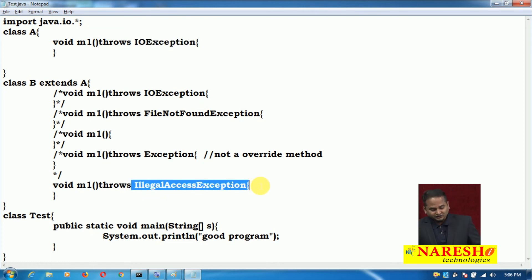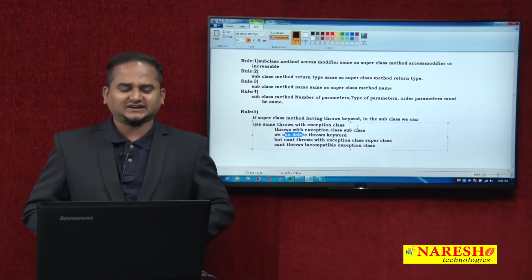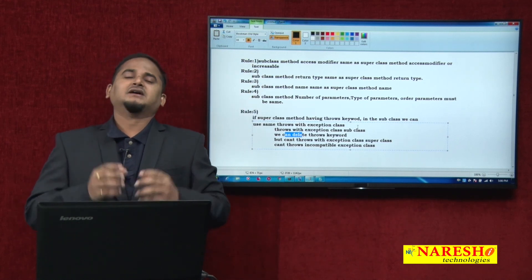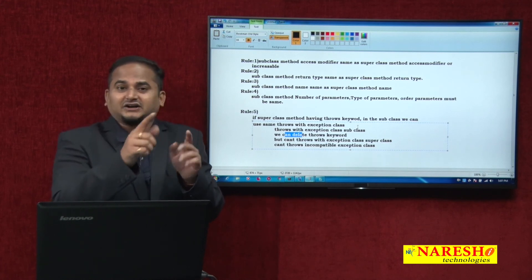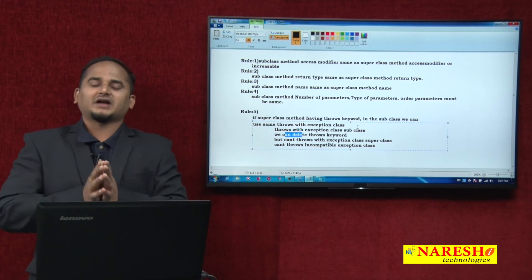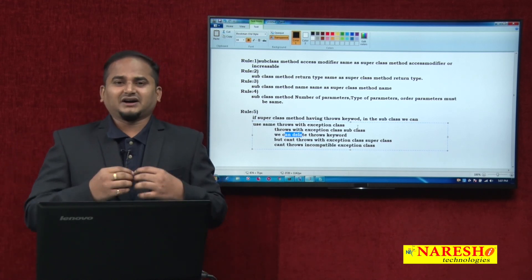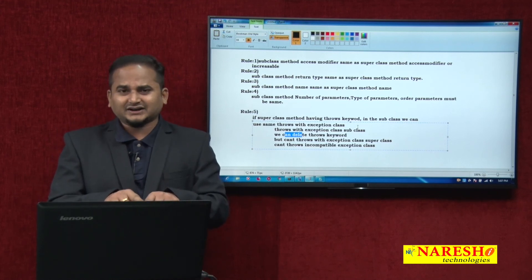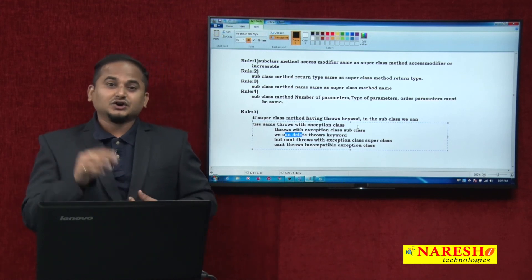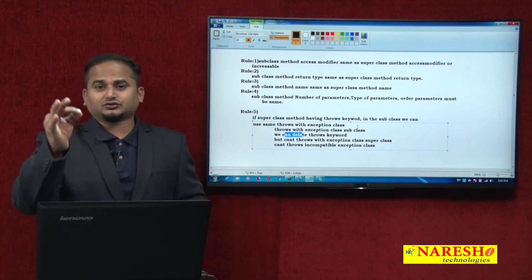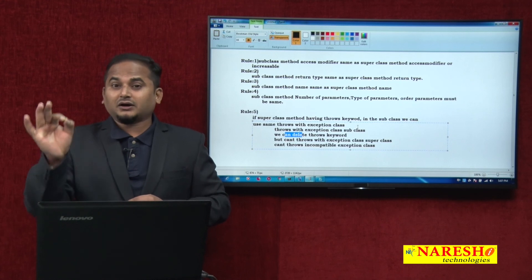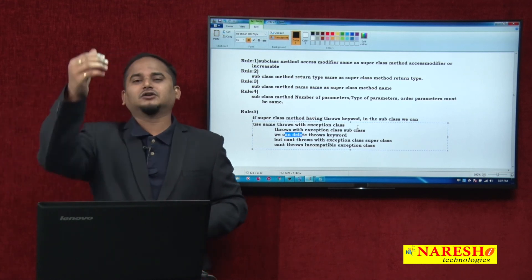So this is the fifth overriding rule in Java. Up to now there are five overriding rules. First: subclass method access modifier must be same as or higher than superclass access modifier. Second: subclass method return type must be same as superclass method return type — no implicit conversion. Third: method name must be same as superclass method name. If you use a different name without the @Override annotation, it just becomes a new method of the subclass. Fourth: number, type, and order of parameters must be same as superclass method parameters.